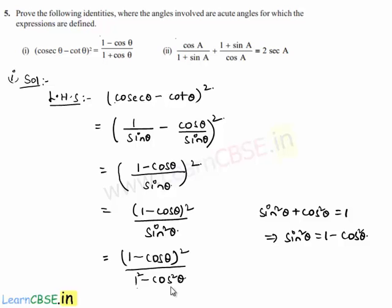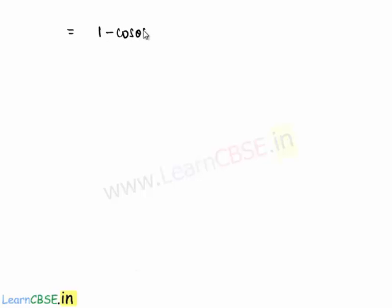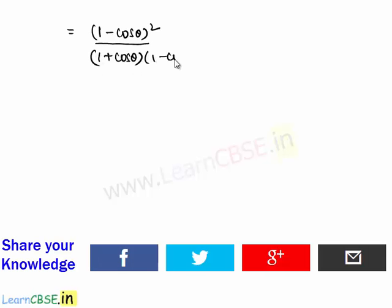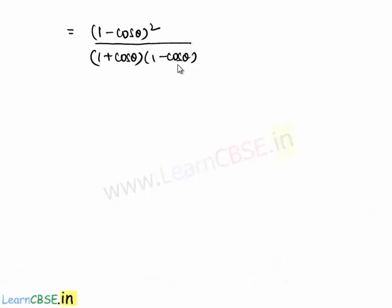Now, (1 - cos²θ) can be written as (1 - cos θ)(1 + cos θ), which is in the form a² - b² = (a+b)(a-b). So the expression becomes (1 - cos θ)² / [(1 - cos θ)(1 + cos θ)]. The common factor (1 - cos θ) cancels.